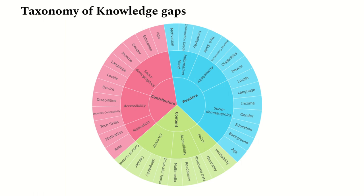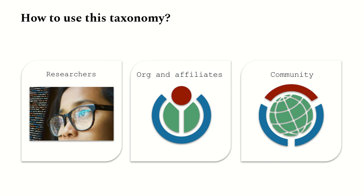This concludes the overview of the taxonomy of knowledge gaps. We have seen a coarse-grained overview of what's in this taxonomy. At the end of the presentation, I will provide a link where you can read more about each individual gap and the sources we used. Now that the taxonomy has been built, where do we go from here? How do we use this taxonomy?